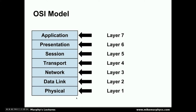Of all these layers, the physical layer is the only one that strictly requires hardware. The remaining layers of the OSI model can be implemented entirely in software.